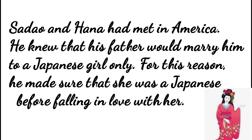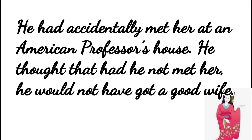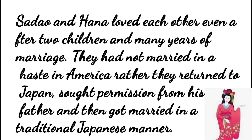They had met in America, but Sadao knew that his father would get him married to a Japanese girl only, so he made sure that she was Japanese. Before falling in love with her, Sadao considered himself lucky to have accidentally met her at an American professor's house. He thought that had he not met her, he would not have got a good wife. Even after so many years of marriage and two children, they loved each other. They had not got married in haste in America — they had come back to Japan, taken permission from the father, and then got married in a traditional Japanese manner.